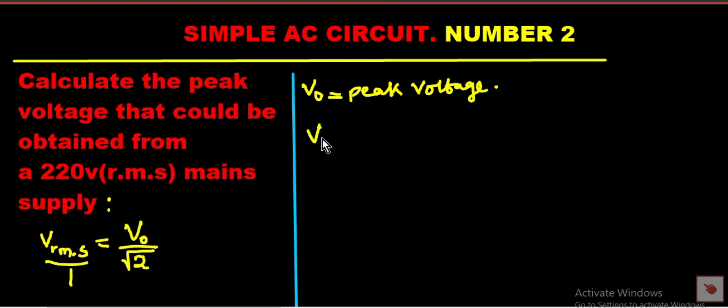So V sub 0 is equal to - that is going to be V RMS, it can also work either way, multiply by root 2. It can also be root 2 multiplied by V RMS. So V naught is equal to - remember we have the value for the RMS value which is 220, then when I'm multiplying it by root 2.